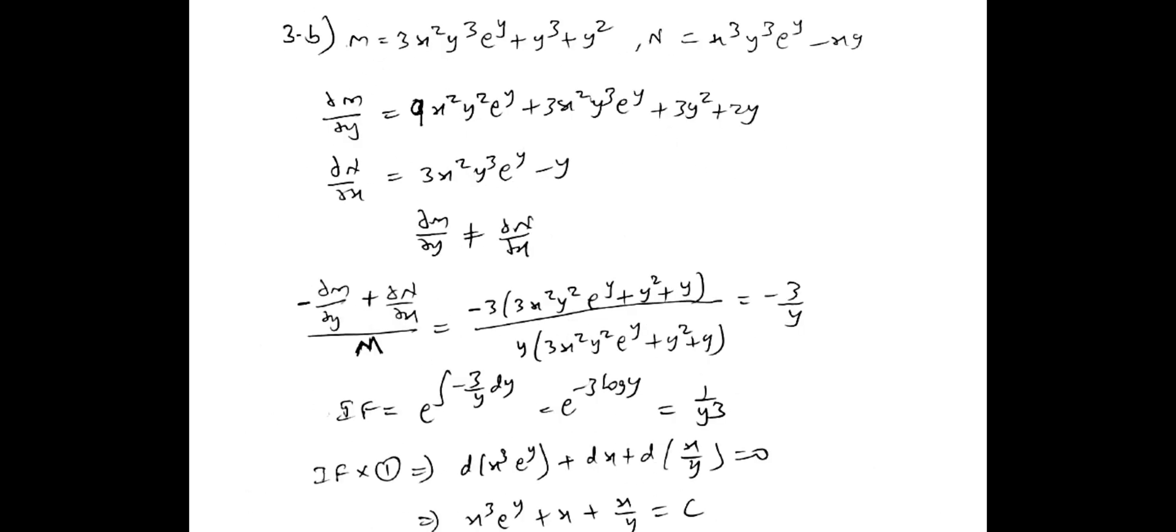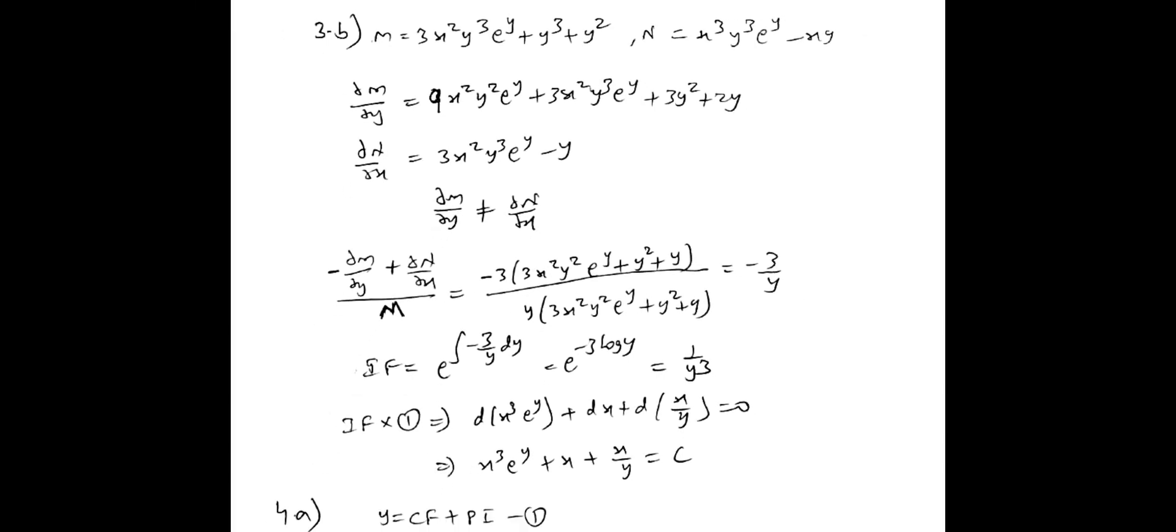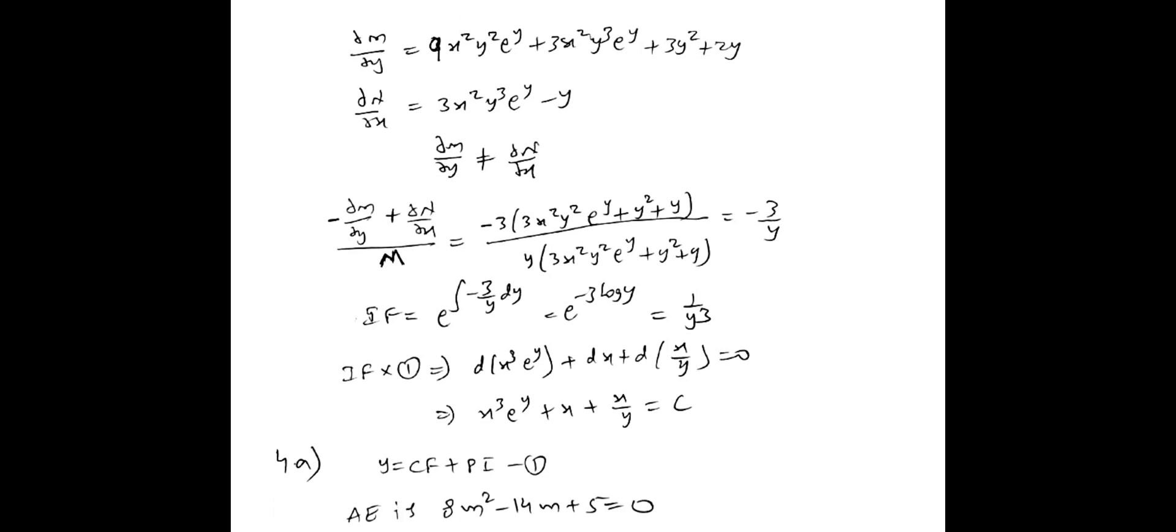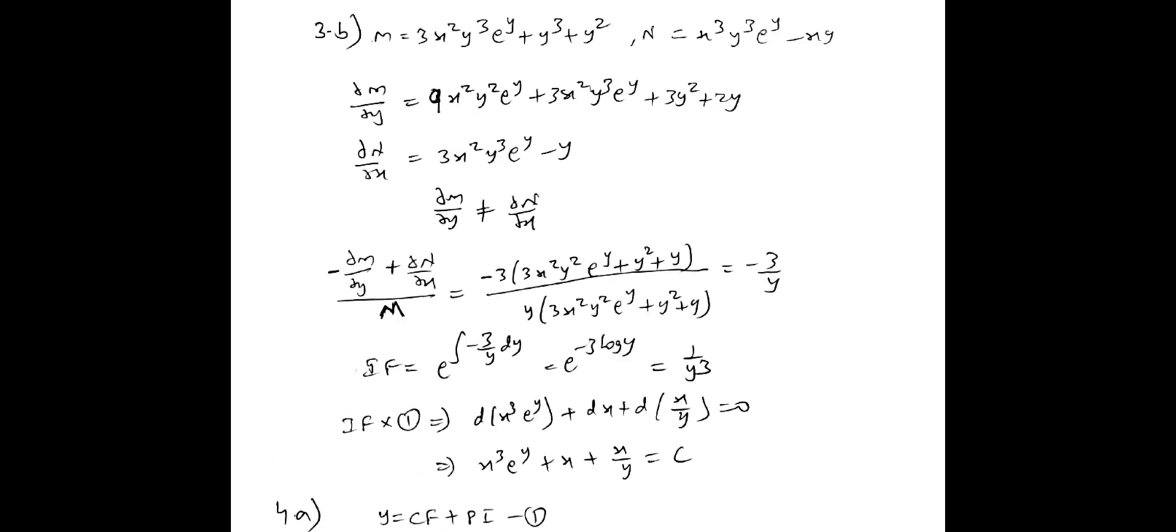Then 3b. What is 3b? This is also integrating factor method. M dx plus N dy. Dou m by dou y is not equal to dou n by dou x in this case. So we have integrating factor. Four or five methods are there. So in that minus dou n by dou x minus dou m by dou y by m, you get minus 3 by y. So that is the integrating factor. Then integrate it. You will get 1 by y cube. So both sides you have to multiply. Then again integrate. You will get the answer.